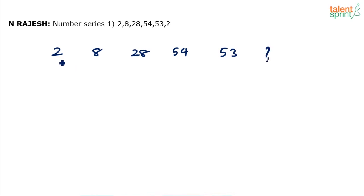Now try to observe the trend first. If you see, the numbers are increasing initially. 2 becomes 8, 8 becomes 28, 28 becomes 54. Then 54 drops to 53. So up until 54 the numbers were increasing and then it dropped. It dropped to 53.